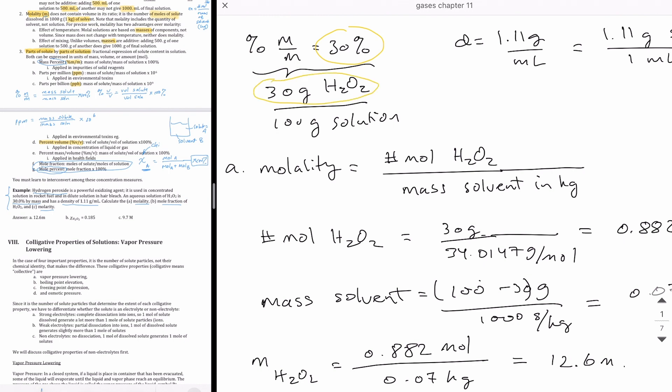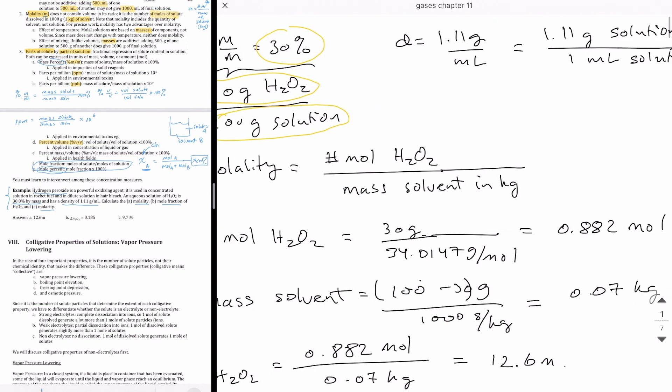So if you know that it's 30%, the way you interpret that number is that it means there's 30 grams of hydrogen peroxide in a hundred grams of solution. Because if you multiply that by a hundred percent, you get 30%. Now, the other information that's given is density. The density is 1.11 grams per milliliter.